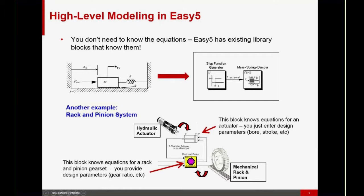Another example, we have a hydraulic actuator and a rack and pinion. Each of these are represented by a single EZ5 component. One for the hydraulic actuator and one for the rack and pinion. The connection lines represent the data flows between the two components. Together, they constitute a system-level model of the hydraulically actuated rack and pinion. The user just needs to have some reasonable design parameters, at least reasonable estimates of those design parameters, such as bore and stroke for the hydraulic actuator gear ratio for the rack and pinion.